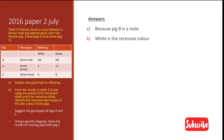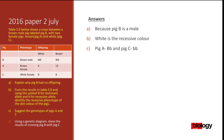Let us move on to question C: Suggest the genotypes of pigs A and C. The genotype for pig A is capital B small b, and the genotype for pig C is small b small b. Let me explain why.